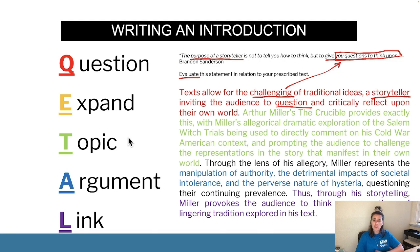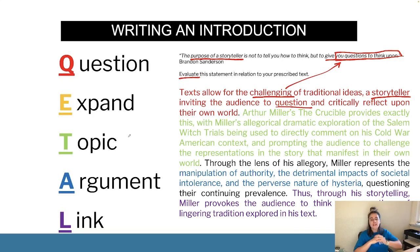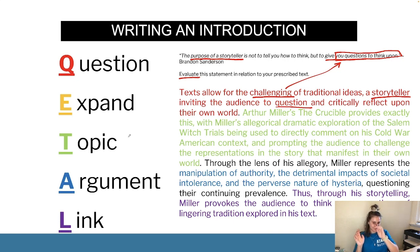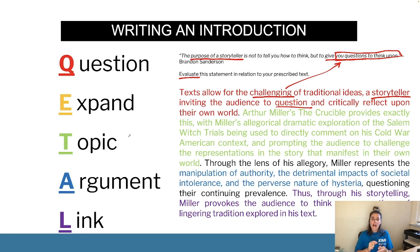We've skipped 'expand' - I didn't really need it here. Now we move into our topic, which basically outlines your essay and provides context about what you're actually going to be talking about. 'Miller's The Crucible provides exactly this' - I hate that phrasing but I leave it - 'with Miller's allegorical dramatic exploration of the witch trials being used to comment on his Cold War American context, prompting the audience to challenge...' You can see I'm bringing up what I'm studying and what the point of studying it is.